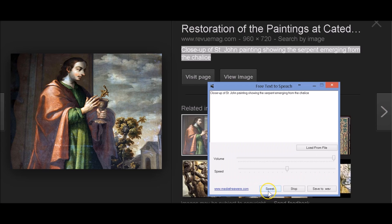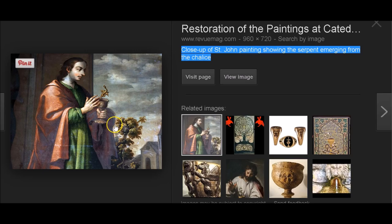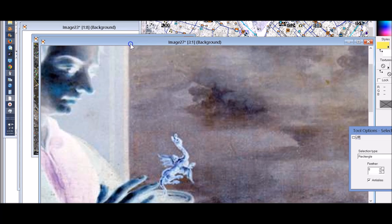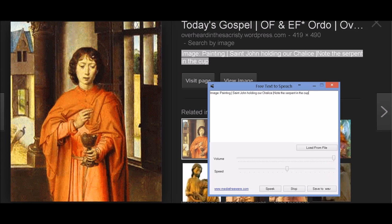Close-up of St. John painting showing the serpent emerging from the chalice. Image painting St. John holding our chalice. Note the serpent in the cup.